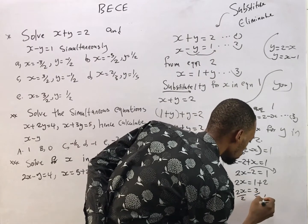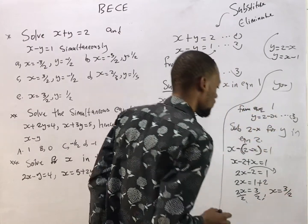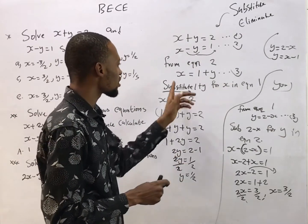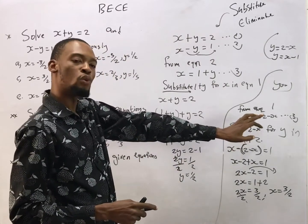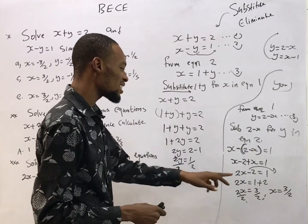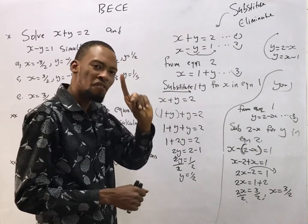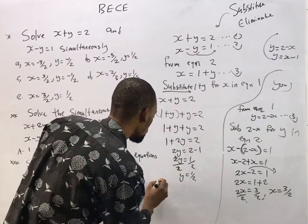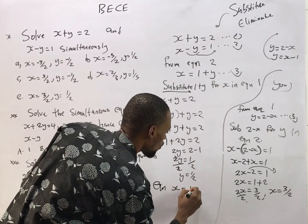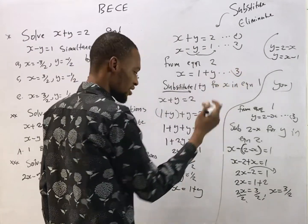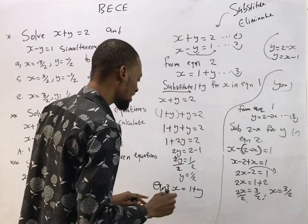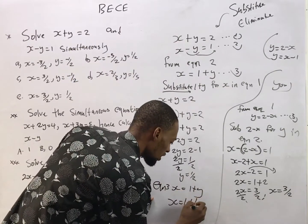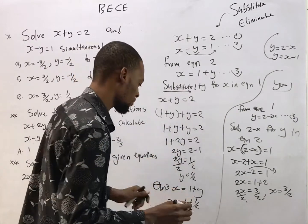Dividing both sides by 2, s equals 3 over 2. You might think these are different answers, but they're not — because I made s the subject, I got the value of y first; you made y the subject, so you got the value of s first. In simultaneous equations you look for both values. Now, from equation 3, s equals 1 plus y, and y is 1 over 2, so substitute that in.